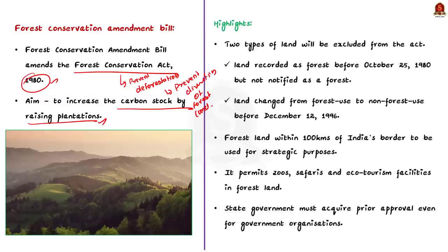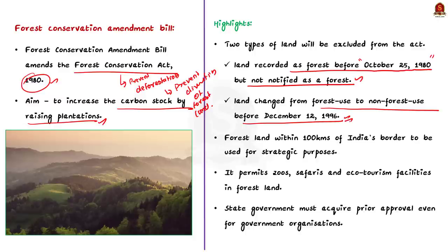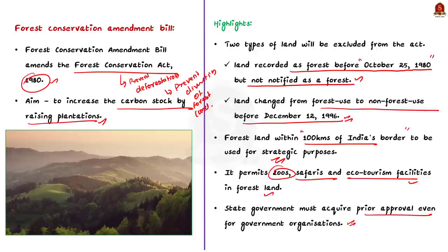The bill excludes two types of land from the act: first, land recorded as forest before October 25, 1980, but not notified as a forest; and second, land changed from forest use to non-forest use before December 12, 1996. The amendment also allows forest land within 100 kilometers of India's border to be used for security or strategic purposes. Unlike the original act — which only permitted checkposts, fencing, and bridges — the amendment permits zoos, safaris, and ecotourism facilities. Additionally, state governments must now acquire prior central government approval even for establishing government organizations on forest land.